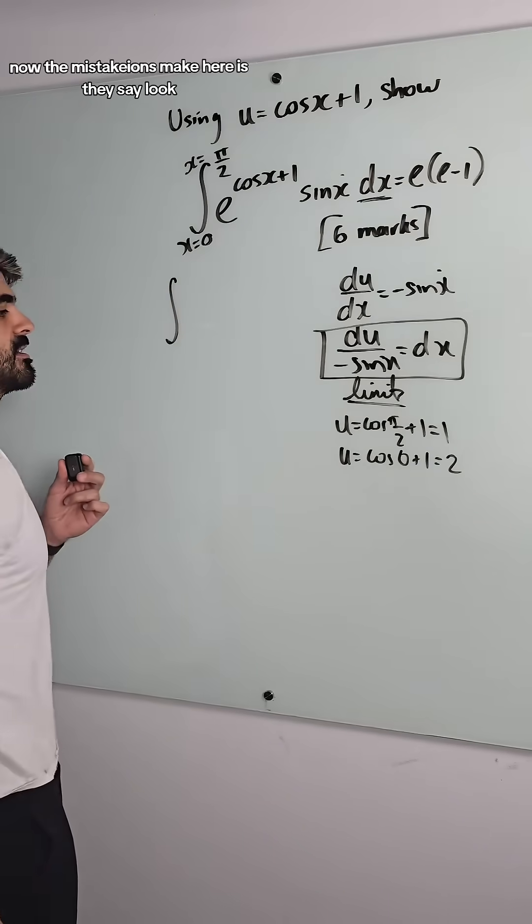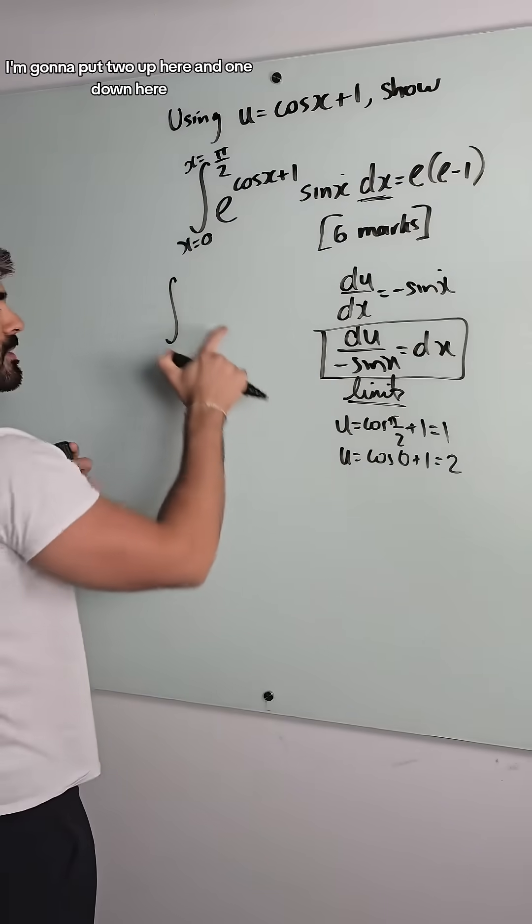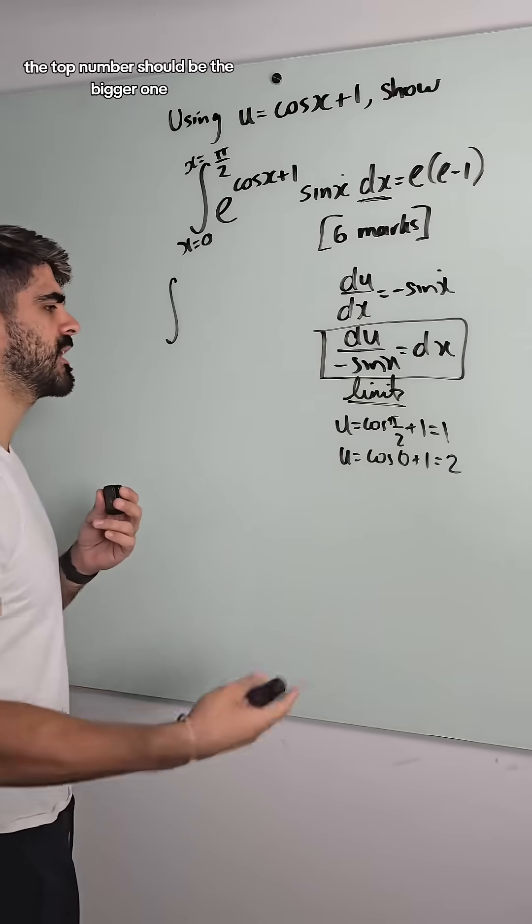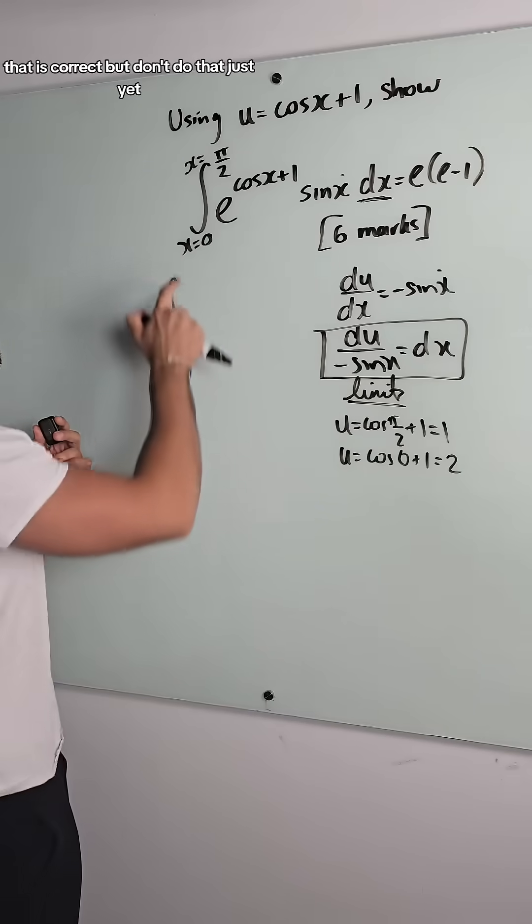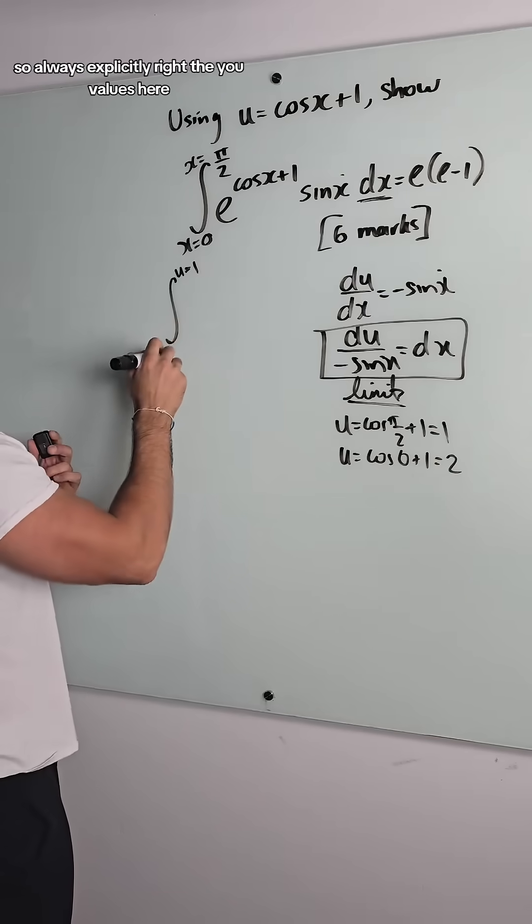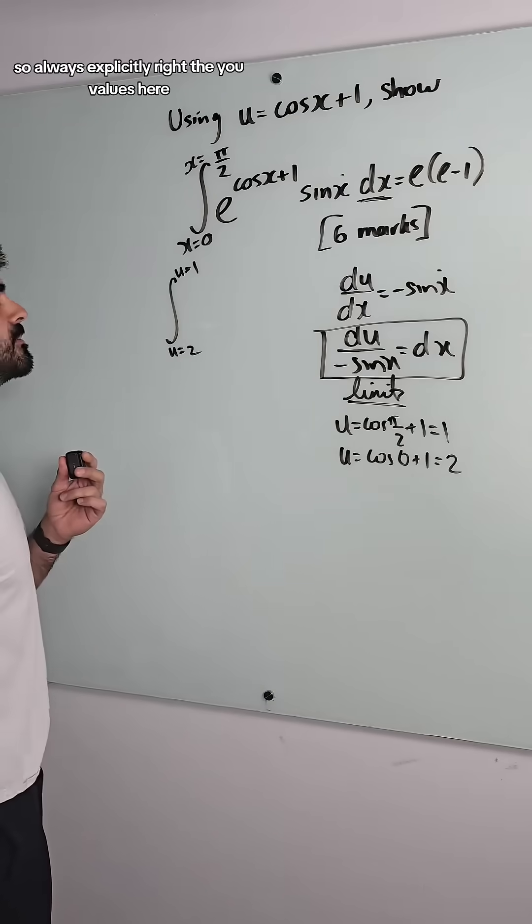Now, a mistake students make here is they say, look, I'm going to put 2 up here and 1 down here, because they say, okay, the top number should be the bigger one. That is correct, but don't do that just yet. When x is pi over 2, u is 1. So I always explicitly write the u values here.